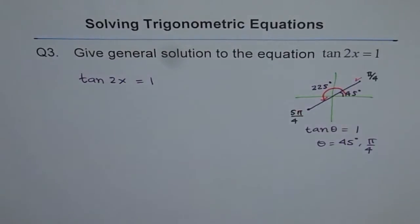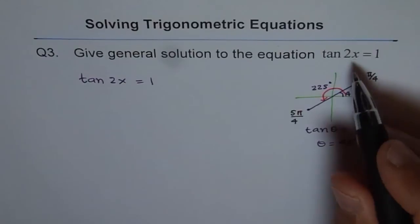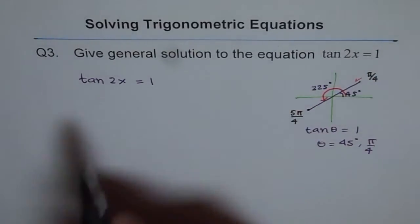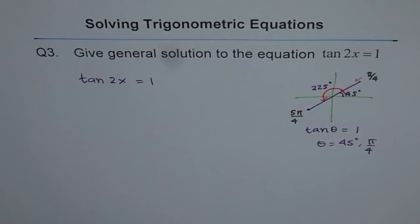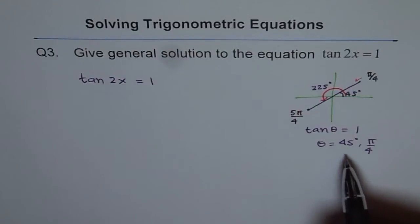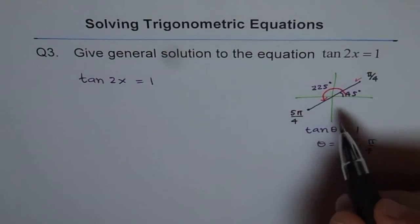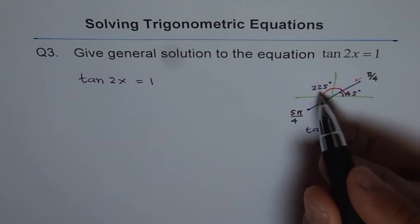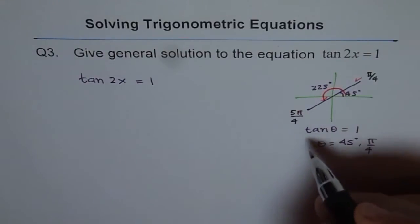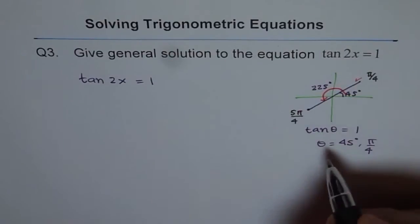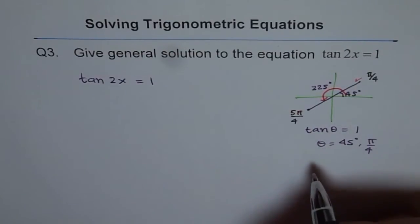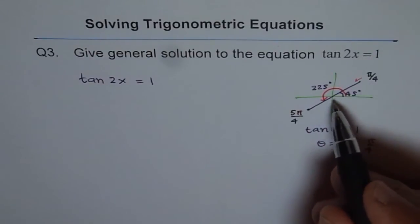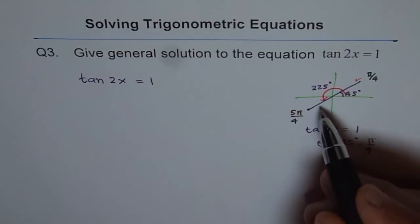These are two solutions when we just restrict our domain to 0 to 2 pi and that is for x. The function is tan of 2x. Anyway, we need to find general solutions. That means, so now every circle, additional 2 pi will give you these two answers. As you can see, time period for tan is pi or 180 degrees. So after every pi or 180 degrees, the values repeat.